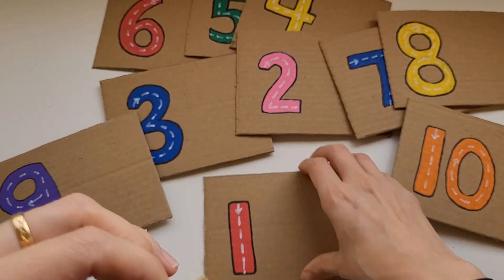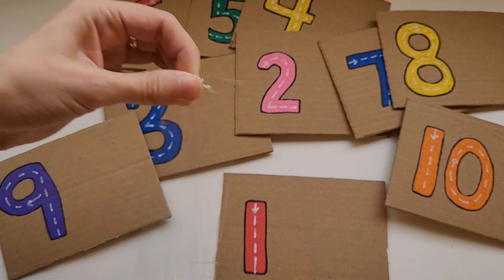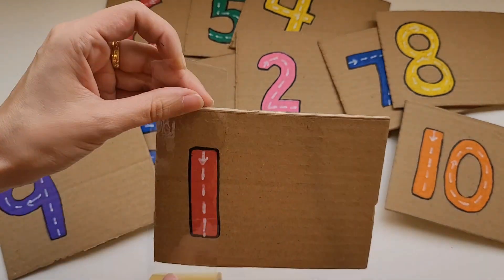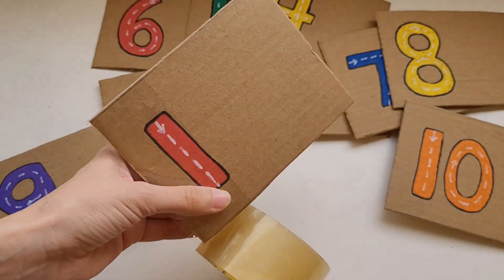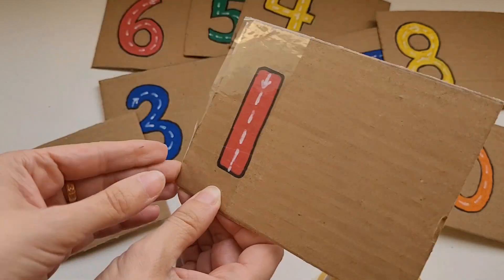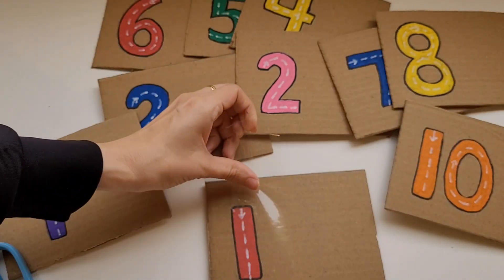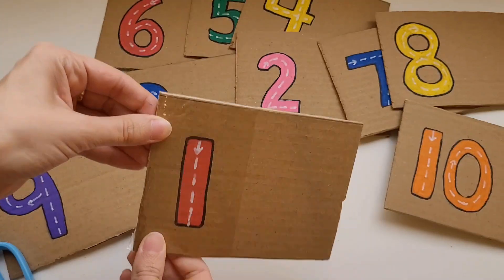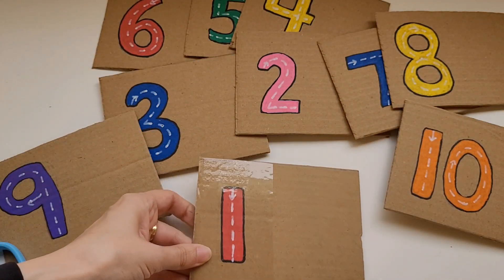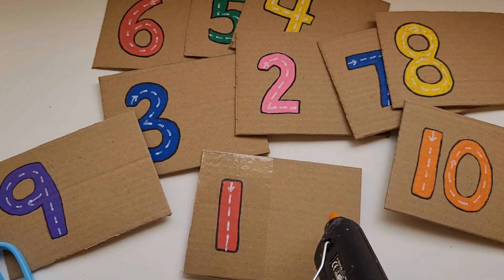After making the little tracing lines on each of the numbers, I'm going to use some white tape to cover the numbers. This way, the child can use a dry erase marker to write the numbers directly on the cardboard and you can erase it using a whiteboard eraser or a tissue.